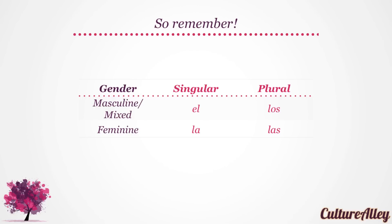Let's look at the definite articles in Spanish again. With masculine noun in singular form, the translates to el. While with masculine or mixed nouns in plural forms, the becomes los. Moving on to the feminine forms, with feminine nouns in singular form, we use la. While with feminine nouns in plural form, we use las.